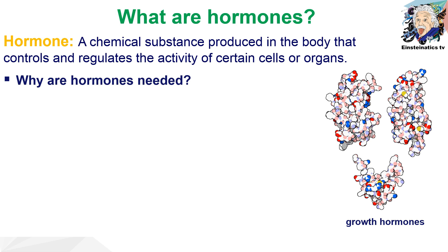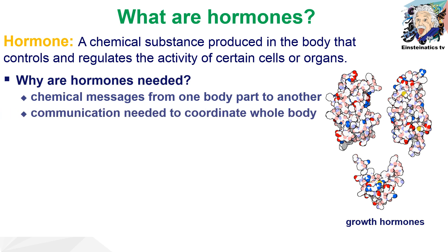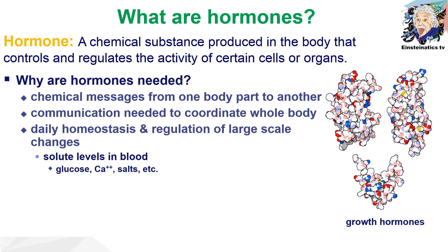Hormones are chemical substances produced by our body which control and regulate the activity of certain cells or organs. Hormones are chemical messages from one body part to another, needed for communication and to coordinate the whole body. They are also used for daily homeostasis and regulation of large-scale changes, such as maintaining solute levels in the blood — including sugar or glucose level, calcium, salt, and more. They also govern metabolism, growth, development, maturation, and reproduction.